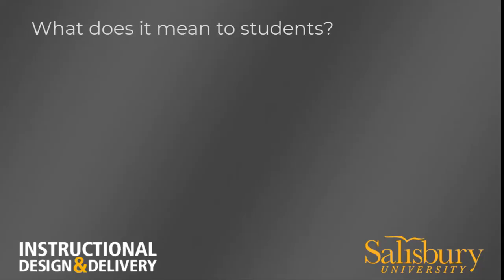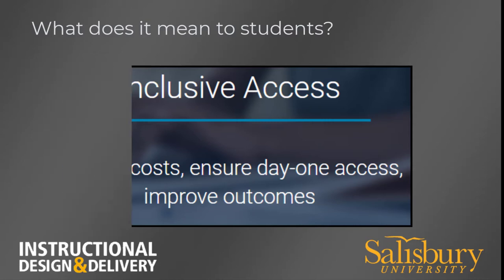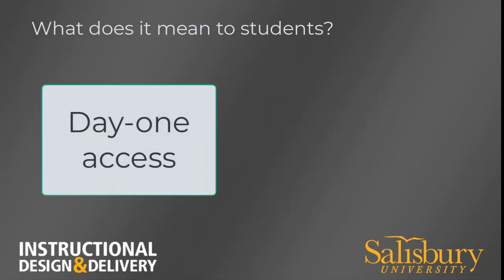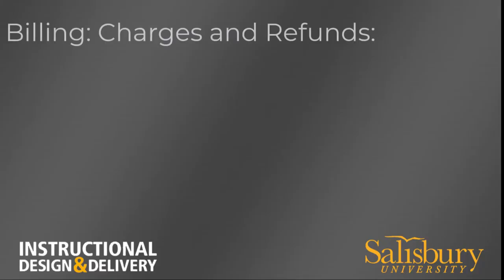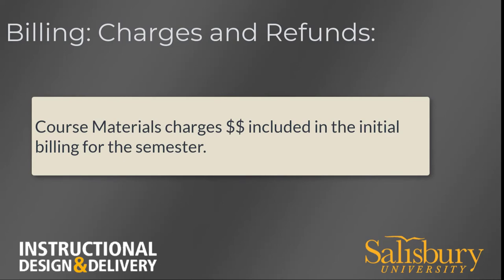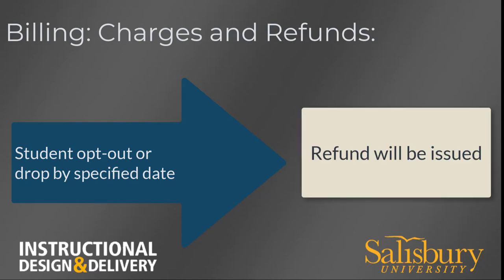What does it mean to students? All students enrolled in a class participating in the Inclusive Access program will have access to the required course materials on the first day of classes at the most affordable price. Students will be charged for the course material upfront with their initial billing, with the option to opt out. Students who drop the course or opt out by a specified date will be refunded for the amount charged.